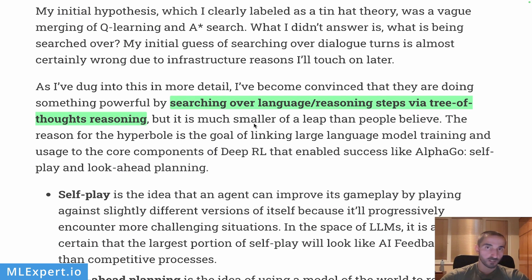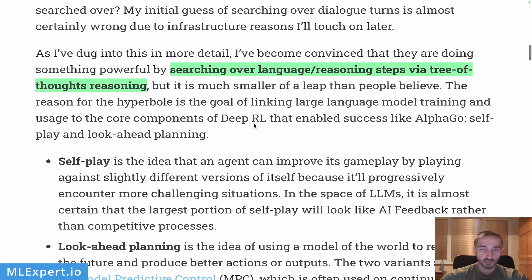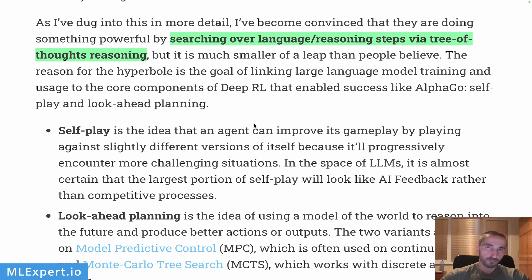The key hypothesis about Q* is that it's a combination of a much more advanced technique for prompting large language models — such as the Tree of Thought method — and then scoring each node of the decision tree provided by the language model. This creates a self-perpetual or recursive way to improve reasoning. This is very reminiscent of what AlphaZero did — the model from DeepMind that beat the world's greatest Go player.